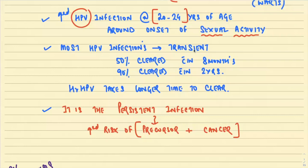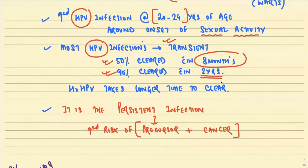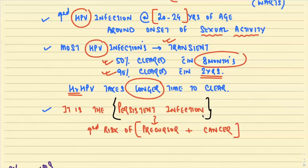Most HPV infections in this age group are transient — they stay for a short period and then go away on their own. Around 50% of HPV infections are cleared within eight months, and 90% are cleared by two years. High-risk HPV takes a much longer time to clear. Only persistent infections that are difficult to clear predispose to pre-invasive lesions and carcinoma.